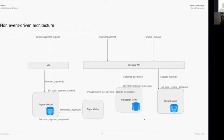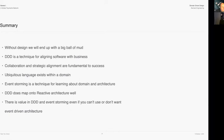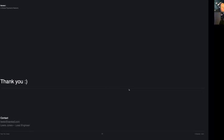Summary: Without design we end up with a big ball of mud - we may even just end up there anyway. Domain Driven Design is a technique for aligning software with the business. Collaboration and strategic alignment are fundamental to success. Ubiquitous language emerges from the domain. Event storming is a technique for learning about the domain and architecture. DDD maps well onto event-driven architecture, but there's value in DDD and event storming even if you can't or don't want to use event-driven architecture.